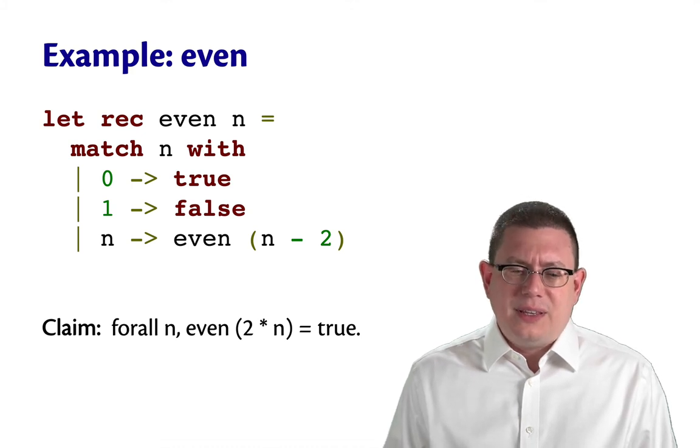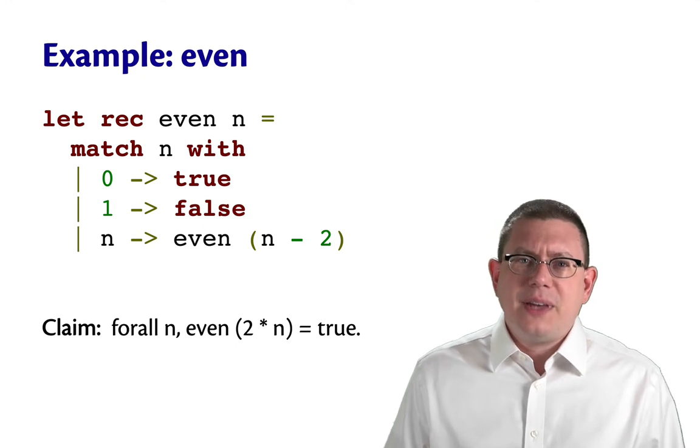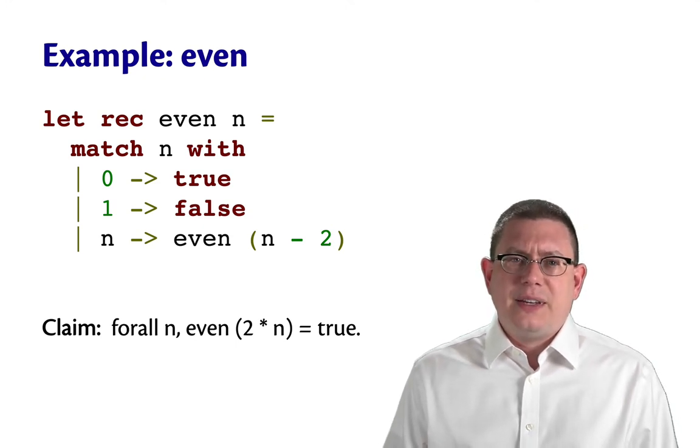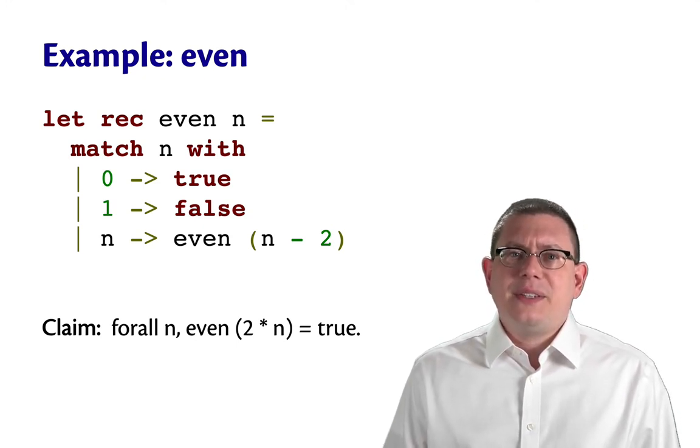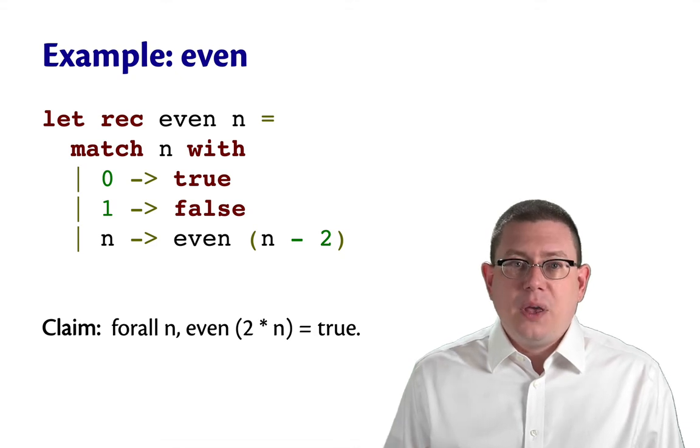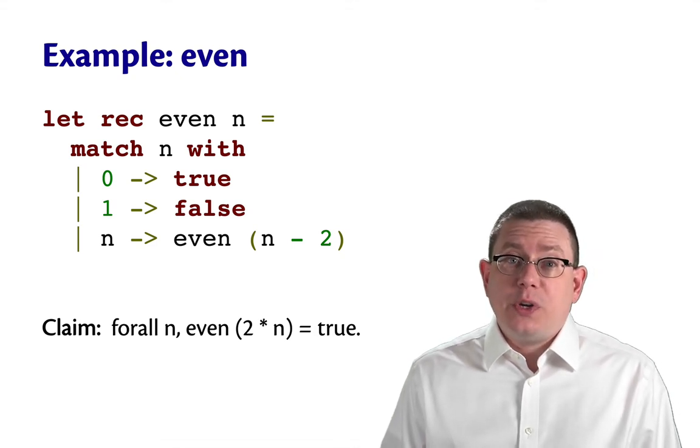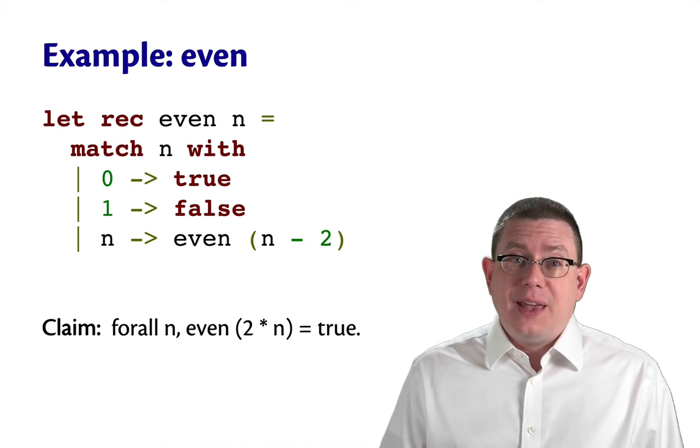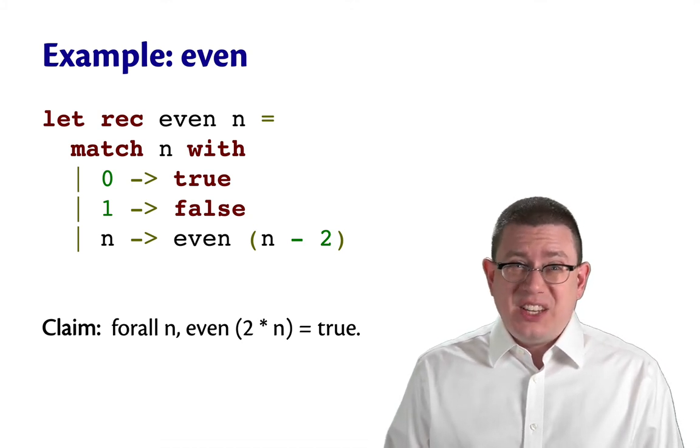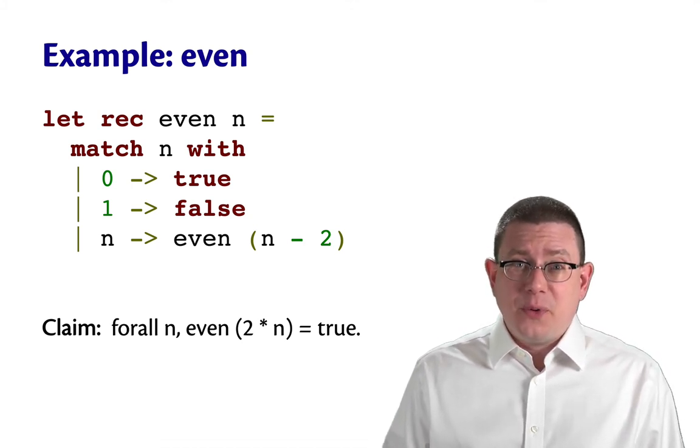And it just is equal to even of n minus 2. And now we have to reason about whether n minus 2 is even or not. We're kind of stuck at that point. What we have here is a case where we want to do a proof about whether a number is even, and that reduces to needing to do a proof about whether a smaller number is even.